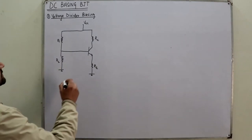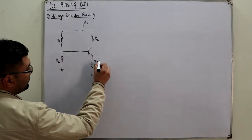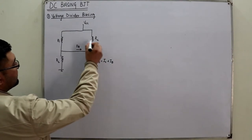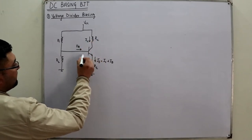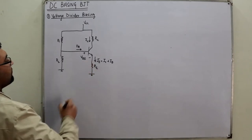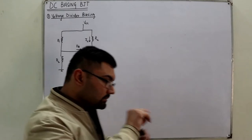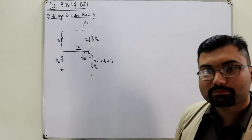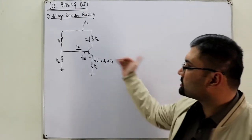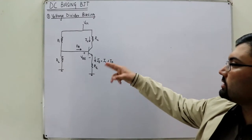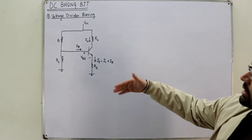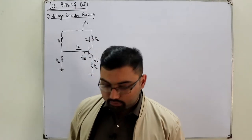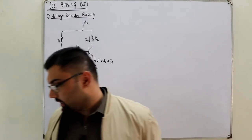The emitter current IE equals IC plus IB. There is a VBE voltage drop across the forward-biased PN junction diode. This is an NPN transistor — you know it from the arrow pointing outwards. For PNP, the arrow points inwards toward the base terminal, and the direction of currents and polarities are opposite.